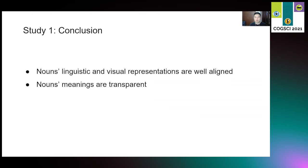In conclusion, we replicated the Rose and Love's analysis of nouns, and our results accord with Rose and Love's finding that nouns' linguistic and visual representations are well aligned. In other words, nouns' meanings are relatively transparent. When we want to ask, is this also true for verbs?